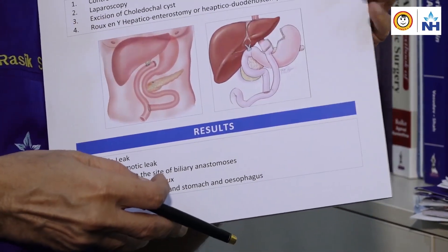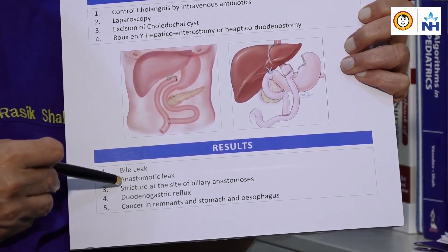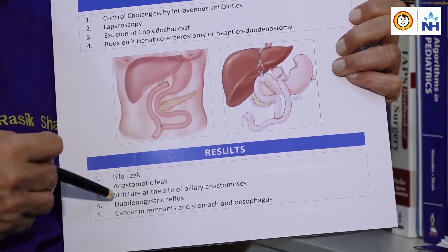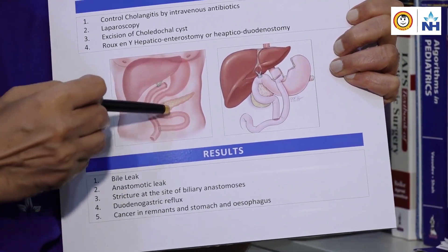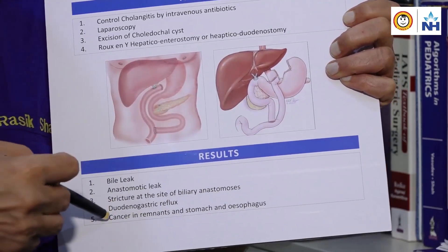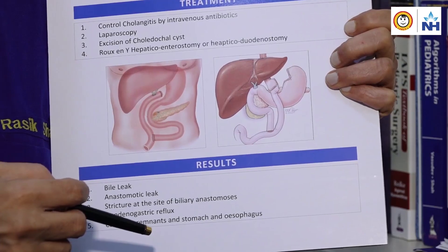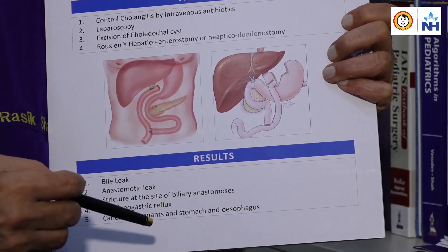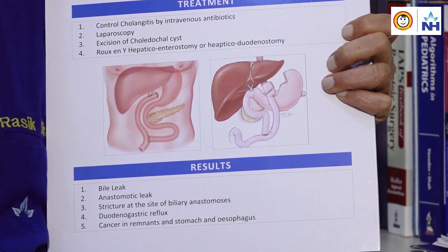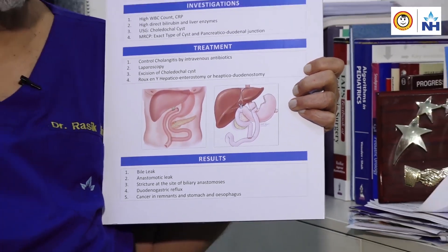Some complications that can occur after surgery include bile leak, anastomotic leak, stricture at the site of anastomosis, duodenogastric reflux, and cancer in the stomach, esophagus, or in the remnant of the common bile duct. After surgery, the child needs to be kept under surveillance to detect any of these complications early.